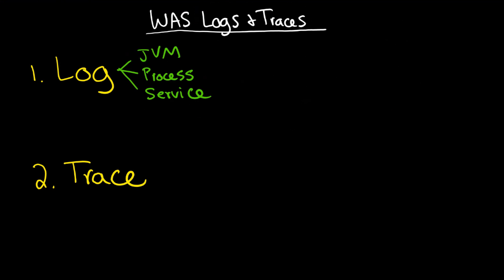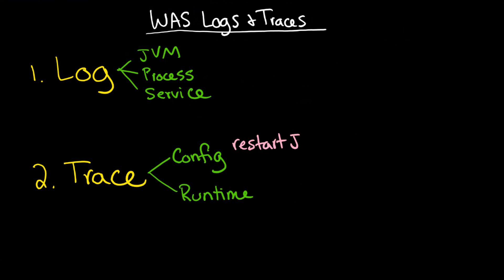The second thing is the trace. The trace has two components: the config and the runtime, shown as tabs in the system. The difference is that whatever you set up in config won't take effect until you restart the JVM, whereas changes made at runtime — what it is you want to see — are immediate.